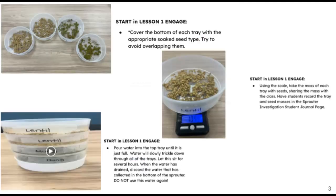Please note that before starting Lesson 1, you will need to begin the investigation from Lesson 2 so the seeds have enough time to grow. You will need to soak seeds one day prior and then use one class period to start the investigation. Use the instructions in the Teacher Guide. You will also find a tutorial linked that takes you step by step through putting the beans in the sprouter trays, taking the mass of each tray and seeds, and adding water to the trays.